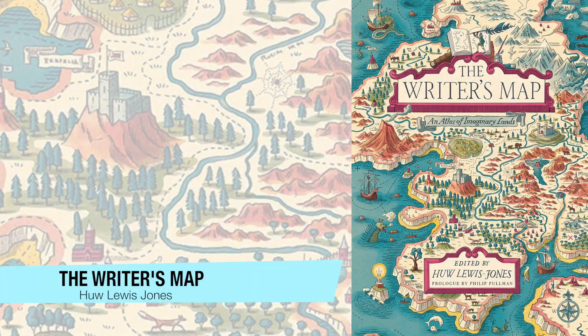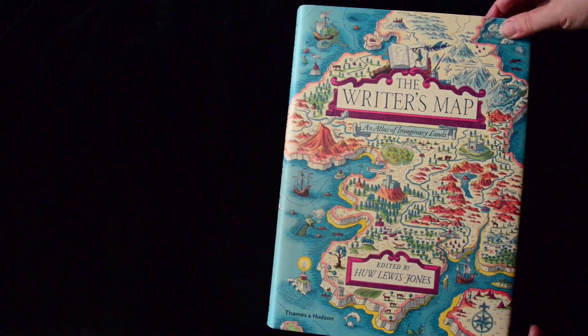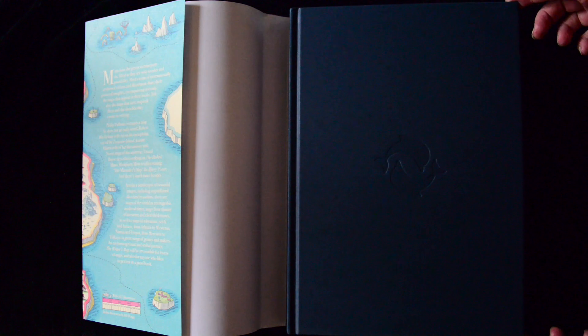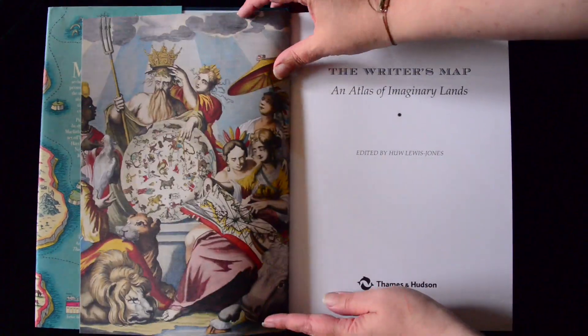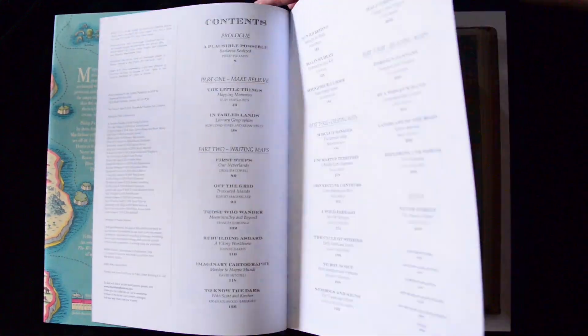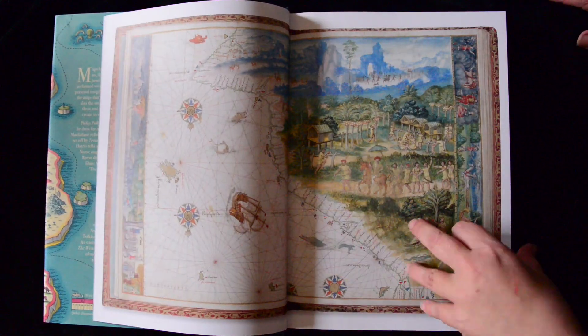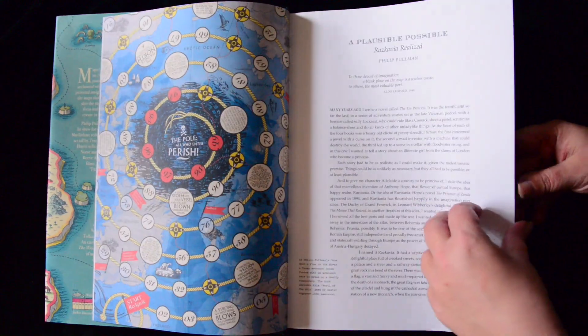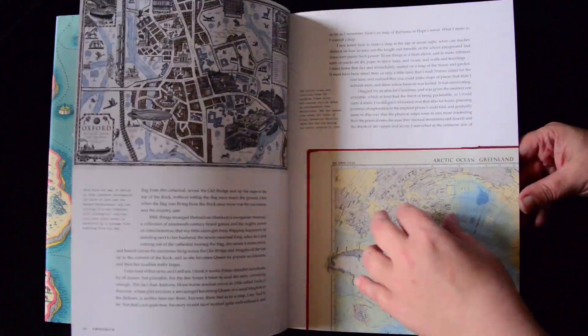The first book I'd like to review is The Writer's Map, edited by Hugh Lewis-Jones. This is probably my favourite of all this type of book in my collection. It's a magnificent atlas of imaginary lands, a collection of essays by and about writers, and it's packed full of large, glorious full-colour illustrations. The essays cover not only maps that appear in the books but also writers' sketches, notes by map illustrators and real-life locations that inspired them.